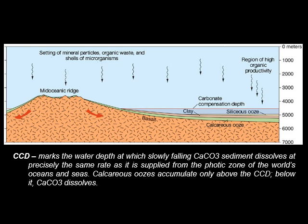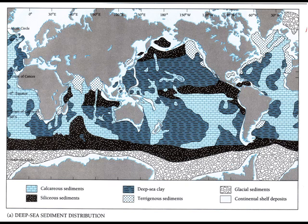The carbonate compensation depth, or CCD, marks the water depth at which settling calcium carbonate sediments dissolve at precisely the same rate as it is supplied from the photic zone. Calcareous oozes accumulate only above the CCD. Below it, calcium carbonate dissolves.